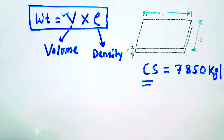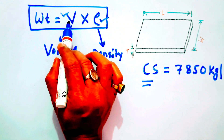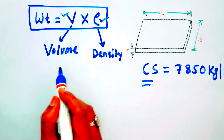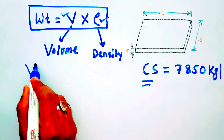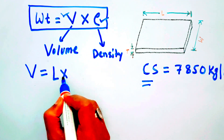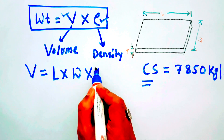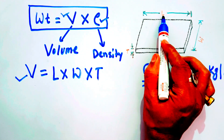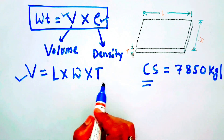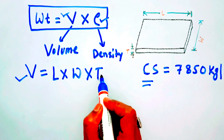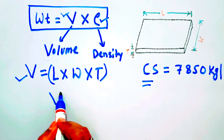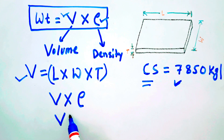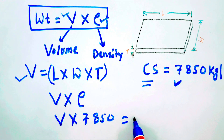Now we know the density. If we calculate the volume, we multiply it by the density and we can determine the weight. The volume of any plate is calculated by multiplying its length, width, and thickness. So volume equals L into W into T. For carbon steel, rho is 7850, so weight equals volume into 7850.